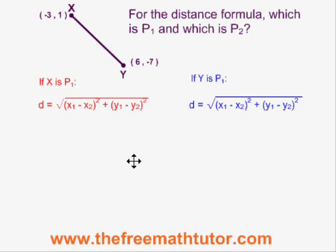Let's find out whether there is any difference by plugging point 1, negative 3, 1, and point 2, 6, negative 7 into the distance formula and then trying it again, changing which is point 1 and which is point 2.